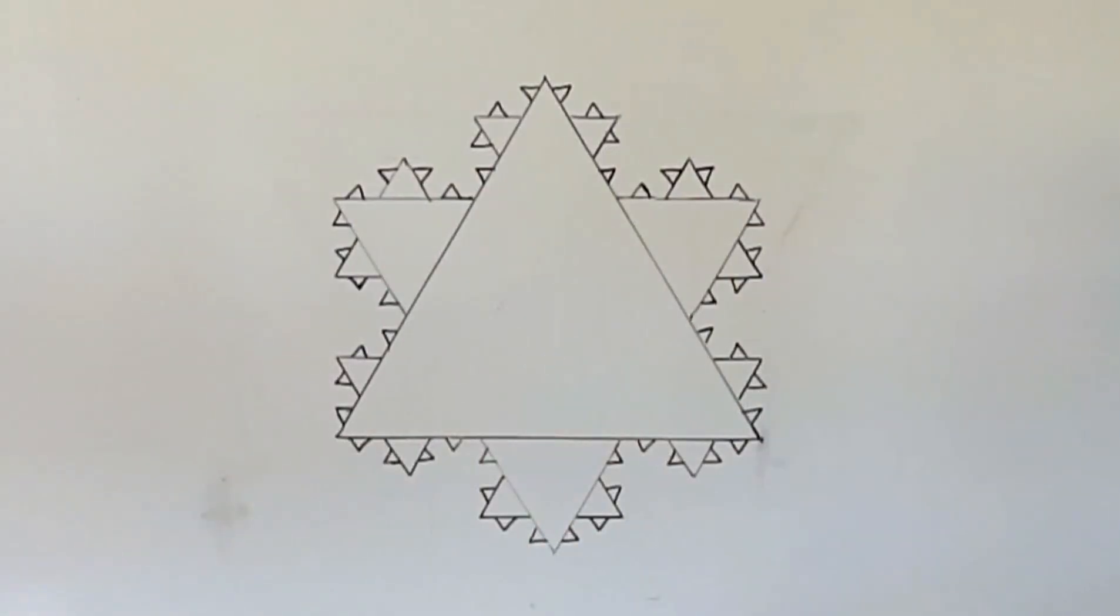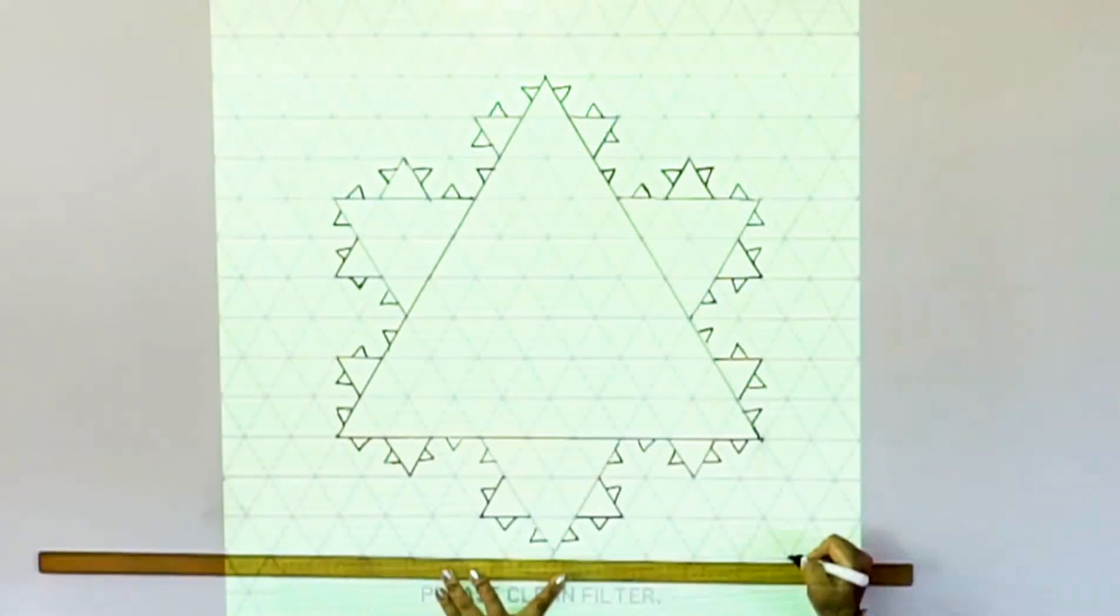It's a fractal because the triangles form a repeating pattern and the shape looks similar on any scale you look at it.